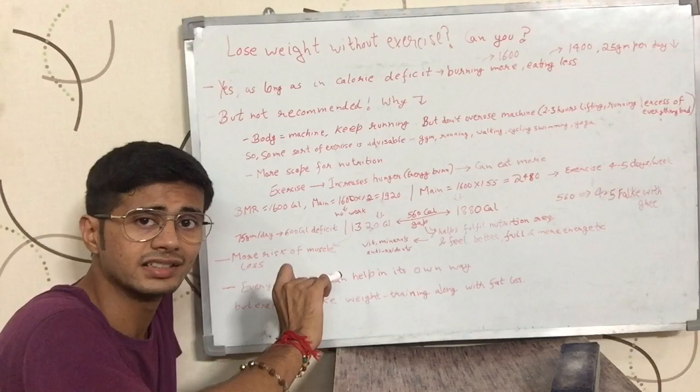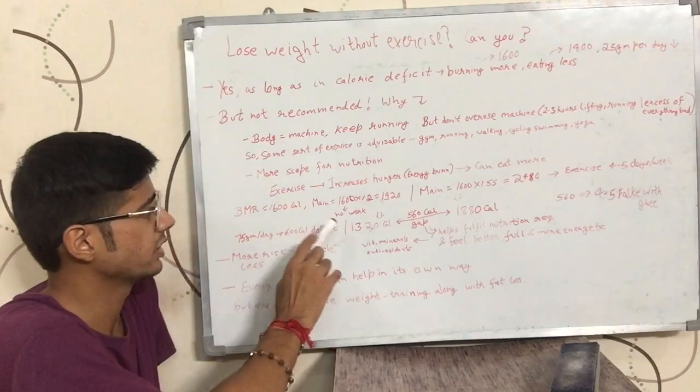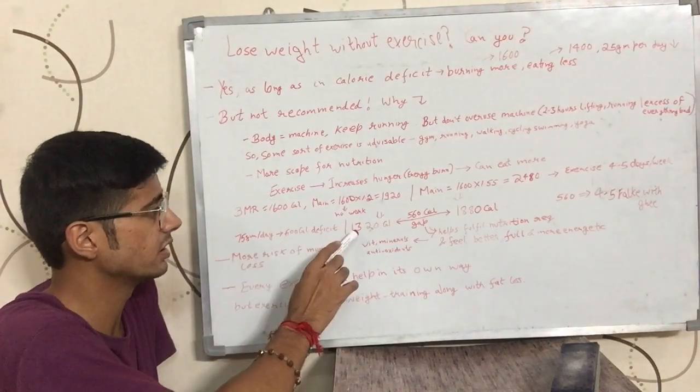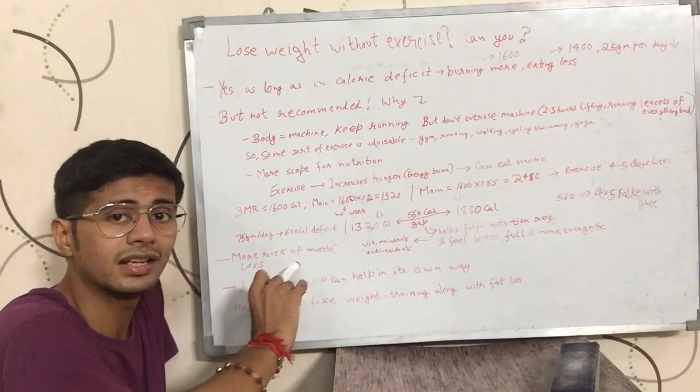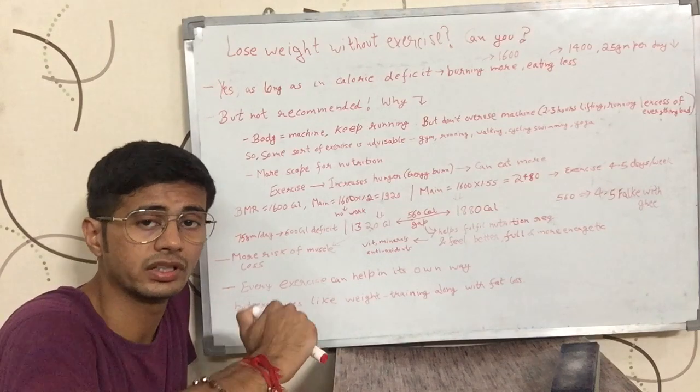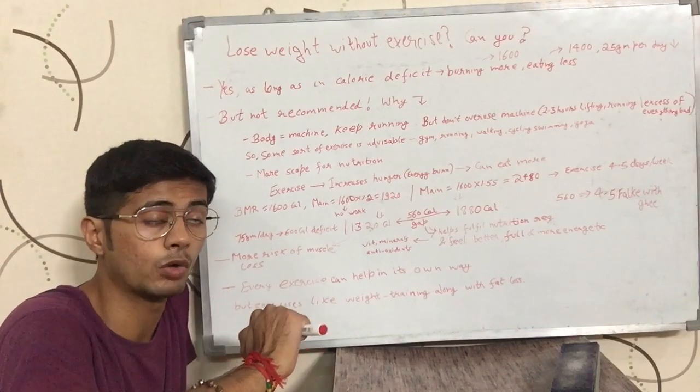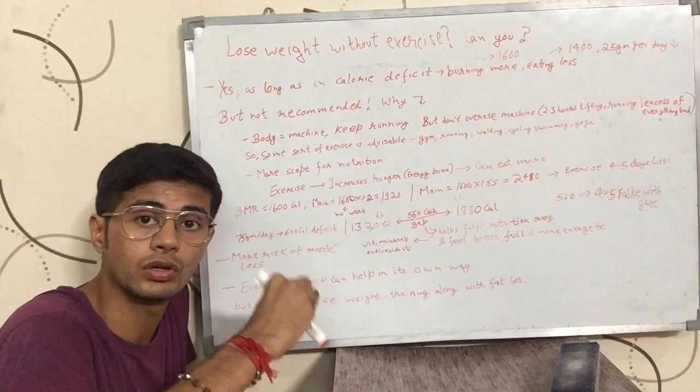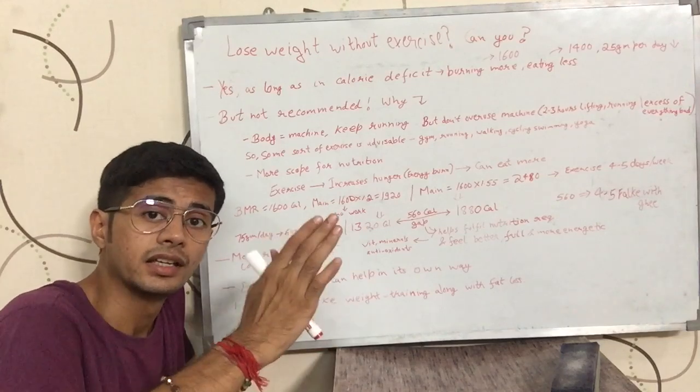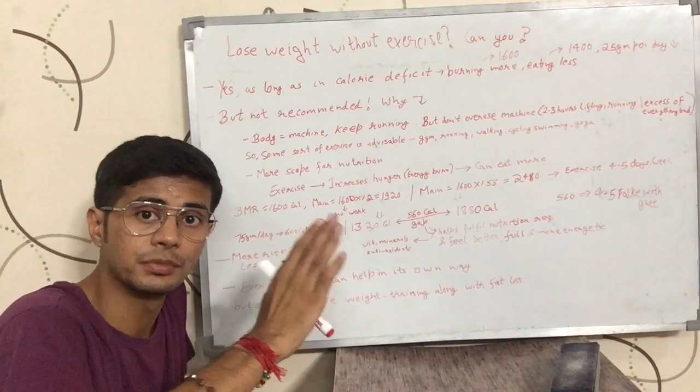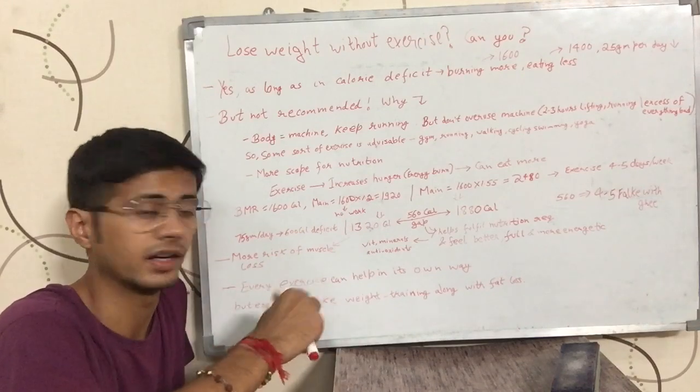And if you are not exercising and you are eating too less, for example, in this case, his BMR is 1600 and he is eating 1320 in case he is not exercising. Then you can experience muscle loss because you are eating too less. When you eat too less, what your body tries to do is conserve energy. And in that process, it sometimes burns the muscle along with fat.